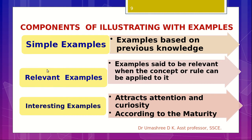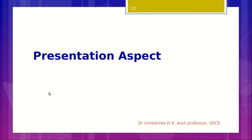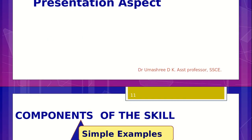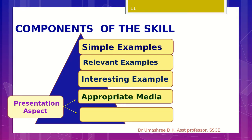These are the three components of formulation of examples: simple, relevant, and interesting examples — all presented by the teacher. Now let us look at the second major component of the skill, which is the presentation aspect. Presentation aspect involves two components. The first one is appropriate media. Using appropriate media is one component of the presentation aspect — here, presentation refers to the presentation of examples, and what kind of media the teacher uses to present examples matters greatly.